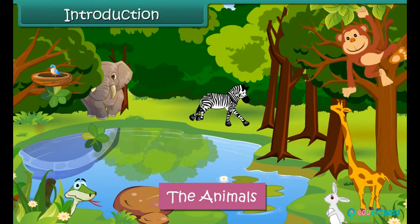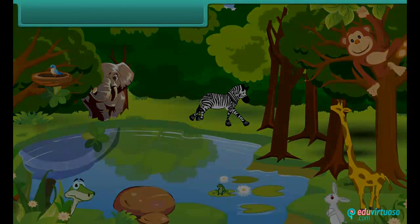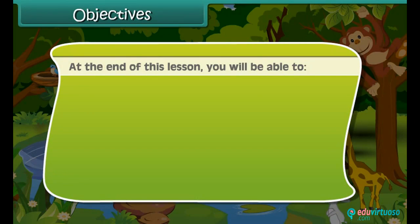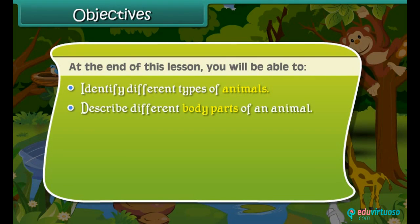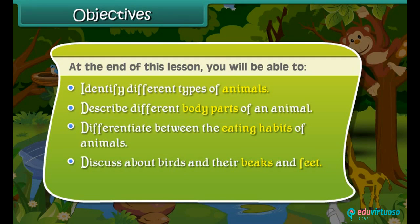So let us learn more about the animals. Objectives: At the end of this lesson, you will be able to identify different types of animals, describe different body parts of an animal, differentiate between the eating habits of animals, discuss about birds, their beaks and their feet, and define the food chain.